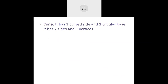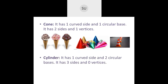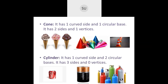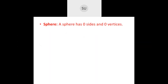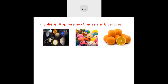A cone has one curved surface, one plain circular base, and one vertex. Examples: ice cream cones, birthday caps, traffic cones. A cylinder has one curved surface and two circular bases, and no vertices. Examples: soft drink tins, batteries, gas cylinders. A sphere has only one curved surface with no straight edges or vertices. Examples: planets, balls, oranges.